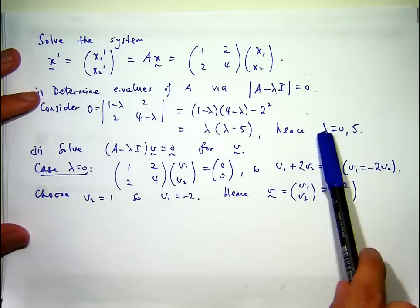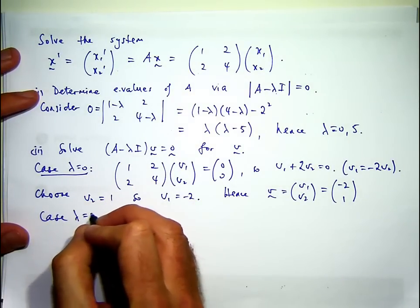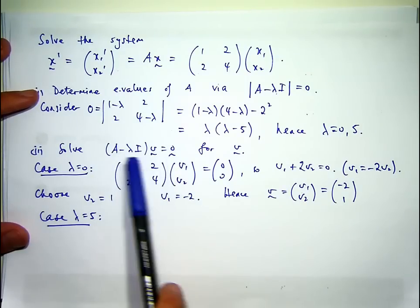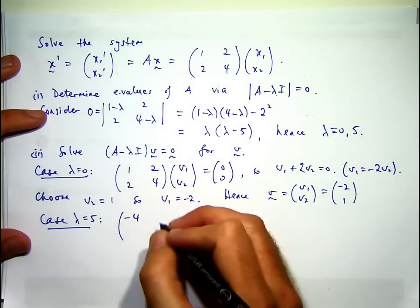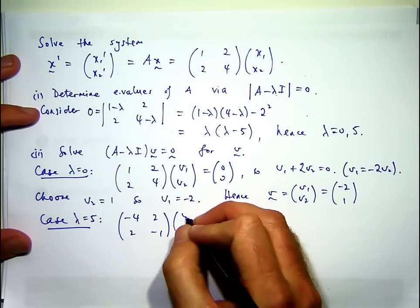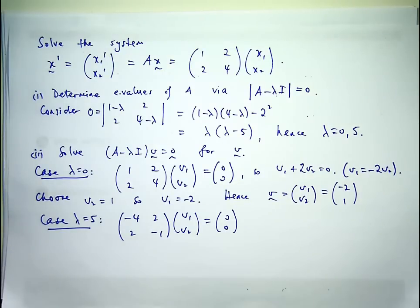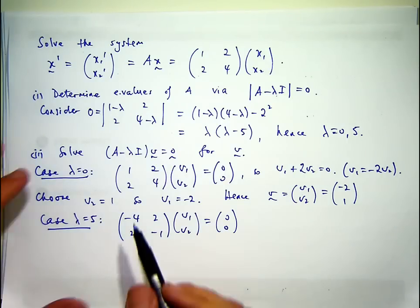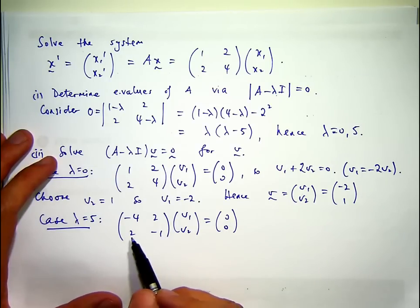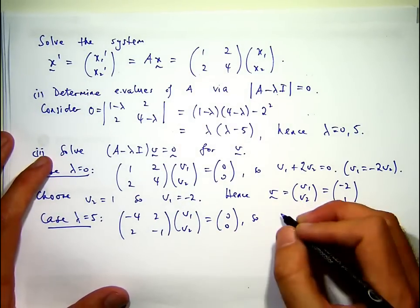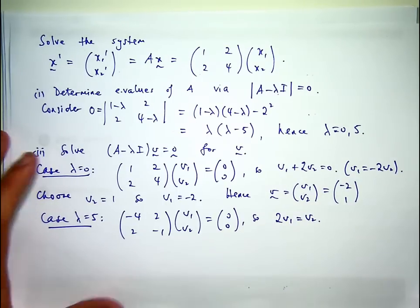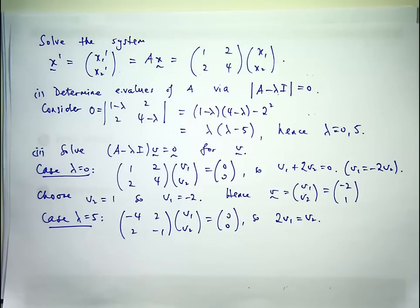Let's look at the case lambda equals five. You want to solve this equation for the eigenvector V corresponding to this value of lambda. When lambda equals five, down the diagonal I'm going to have minus four and minus one. The first line gives me minus 4V1 plus 2V2 equals zero. The bottom line gives me 2V1 minus V2 equals zero, so 2V1 equals V2. Let's choose V1 equals one, so V2 will be two.